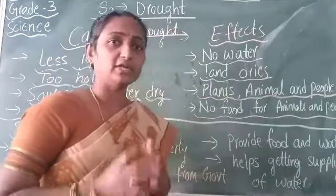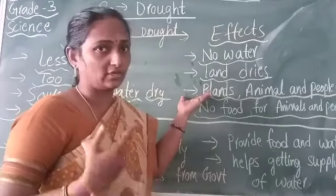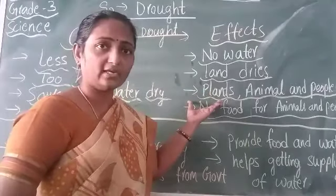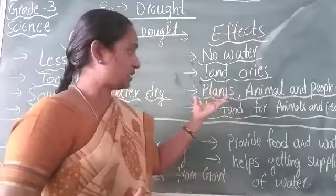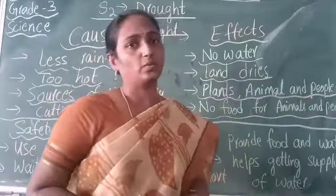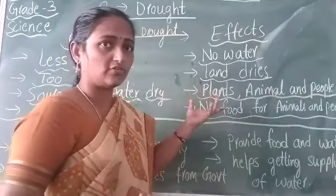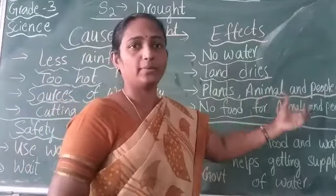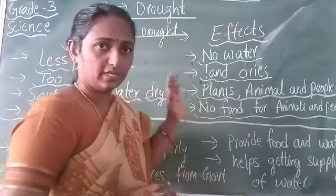We need water for many uses. When plants do not get water, they cannot give food for animals and people. Plants need water for growing, and without water they cannot provide food. So animals and people will die — no food for any of the living things.